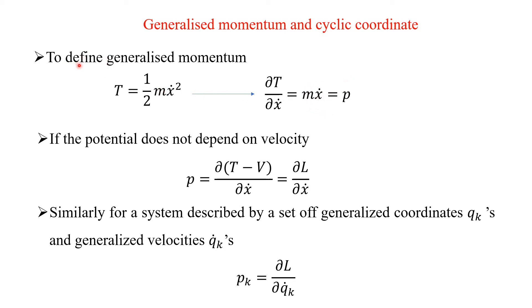To define the generalized momentum, take the simplest case of one-dimensional motion, i.e. assume the particle is moving along the x direction. Then the kinetic energy is one-half m x-dot squared. If you take the partial derivative with respect to x-dot, you will get m x-dot — that is mass into velocity — which is nothing but the momentum.